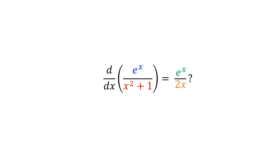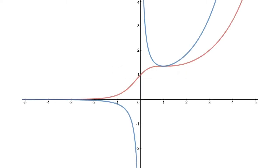Is this correct? To check our guess, let's graph both the original function and our guess for its derivative. The red graph is our original function, e to the x divided by x squared plus 1, and this blue graph is what we guessed its derivative would be, e to the x divided by 2x. Let's see how they compare.